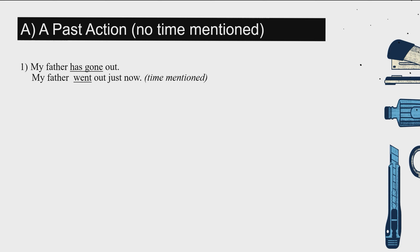If I'm too fast, you need to pause, write the answer and the sentence, then read. After that, make sure you understand what you have written. Let's look at number two: 'The guests have eaten all the food.' 'Have' goes with a past participle — you cannot say 'have eating' or 'have ate', but 'have eaten'.